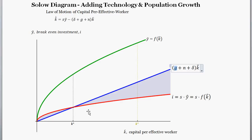Why did we have all those assumptions — output increasing at a decreasing rate, those Inada conditions? We had those assumptions to get this particular shape. With a concave production function, there is one steady state level of capital per effective worker, defined by the intersection of the break-even investment line and the savings-times-production curve. Technically there's another steady state at zero capital and zero production, but that's not interesting. We have all those assumptions so that we get that one meaningful steady state.